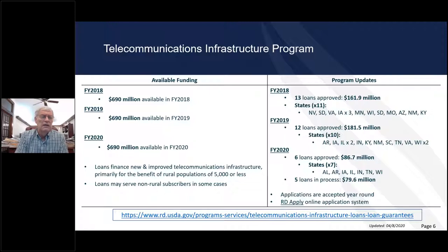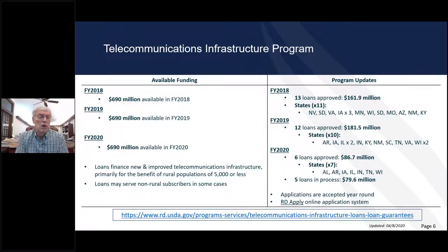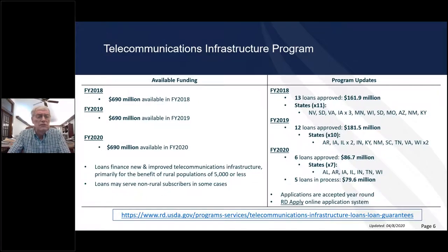As a generic example, we've got one company completing their build in a service area that encompasses a couple of counties and around 3,000 customers. They've been building fiber-to-the-home facilities for several years and are offering telephone service, broadband service, and some cable TV channels. They're offering packages beyond 100 Mbps if that's what you want. Applications for that program are accepted at any time.